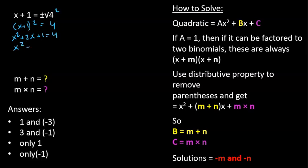x squared plus 2x minus 3 equals 0, so we created minus 4, and then it can be factored to x plus 3 times x minus 1.